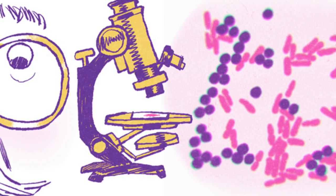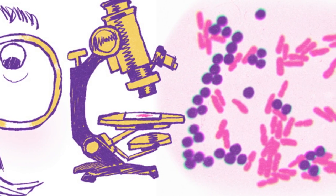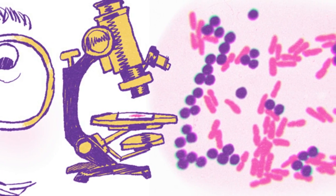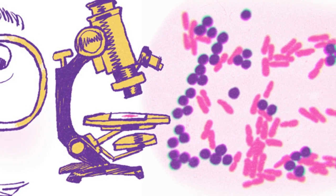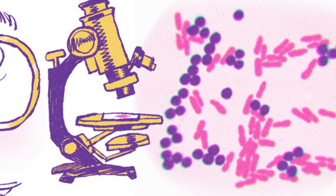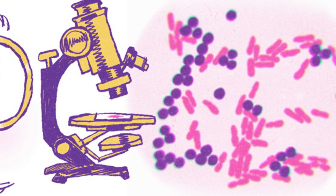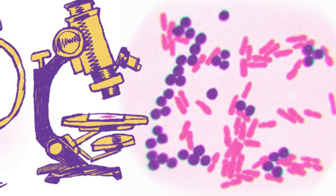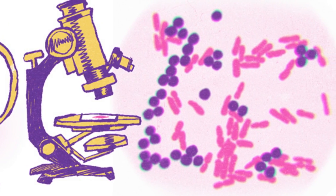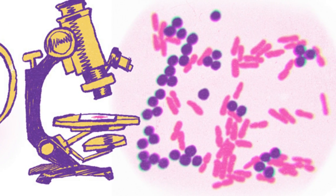Graham published his findings in a scholarly journal in 1884, and the terms Graham-positive and Graham-negative came to be coined.